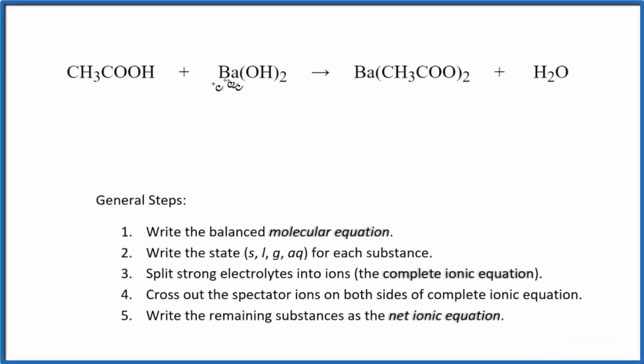In this video, we'll write the net ionic equation for CH3COOH plus Ba(OH)2. This is acetic acid, also called ethanoic acid, and this is barium hydroxide. Sometimes you'll see acetic acid written like this. They're the same thing, just arranged differently. Let's use this one in the video.